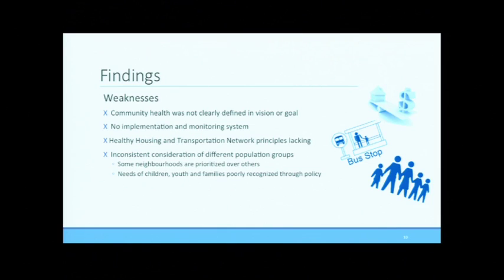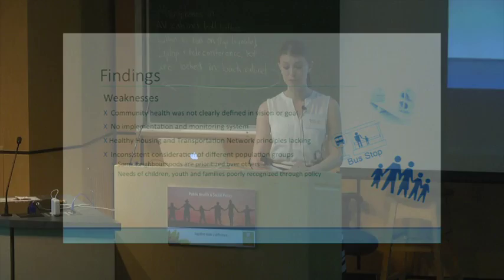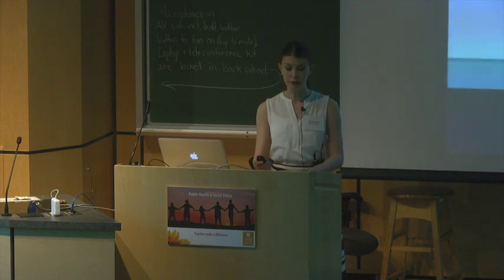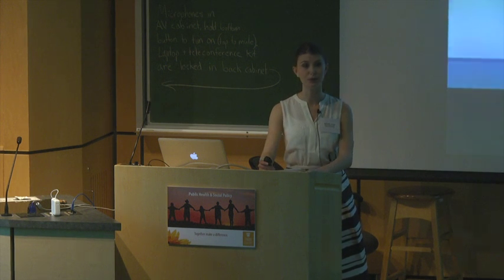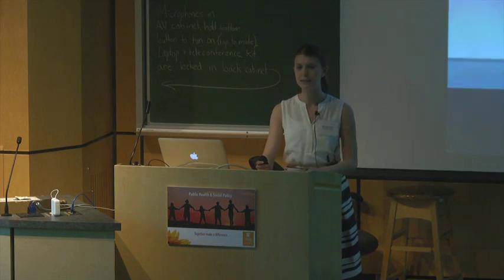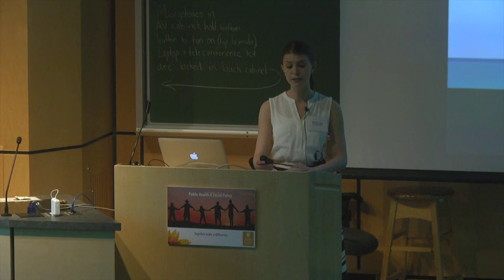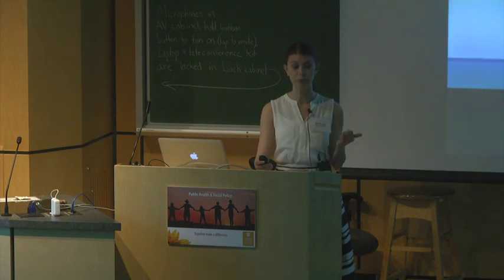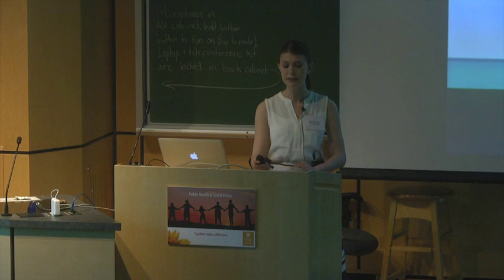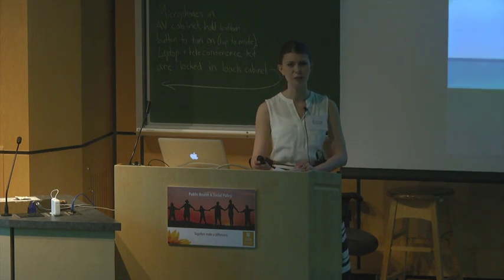I also identified a number of weaknesses throughout my analysis. One was that community health is not explicitly articulated in the community vision. Another was that the district does not have an OCP implementation and monitoring strategy in effect. Third, healthy housing and transportation network principles as described in the Linkages Toolkit were poorly represented through OCP policy. And fourth, there was an inconsistent consideration of different population groups throughout policy and in the OCP consultation process from the previous review. Notably, recognition of different Squamish neighborhoods was inconsistent, and the unique needs of children, youth, and families was also poorly recognized through policy.